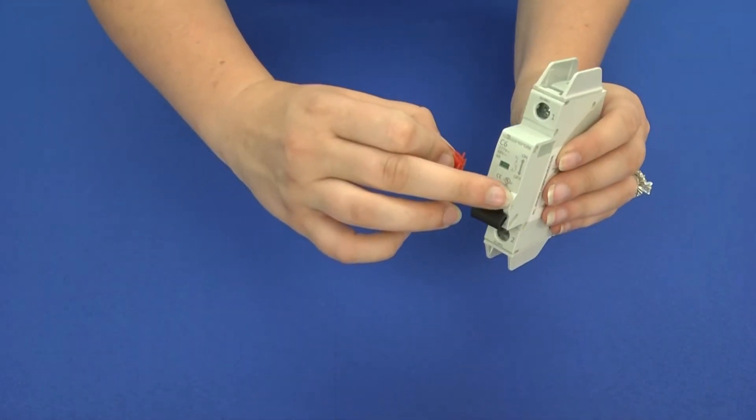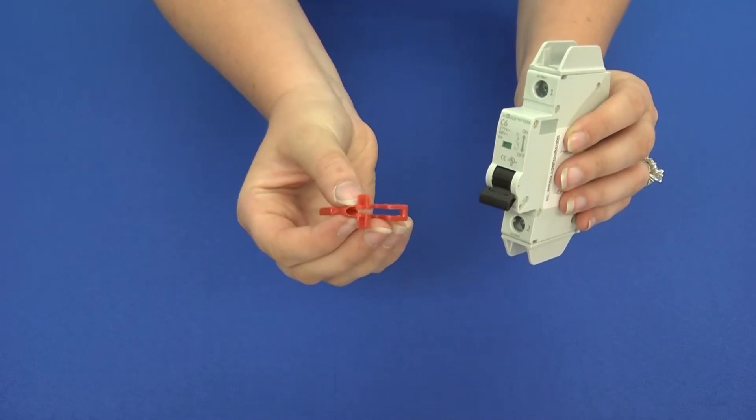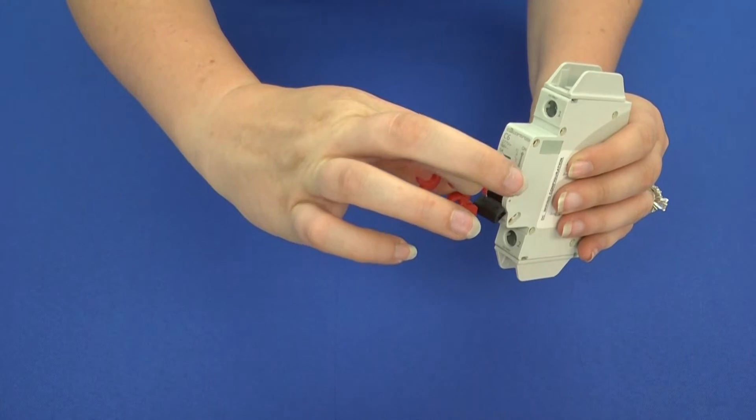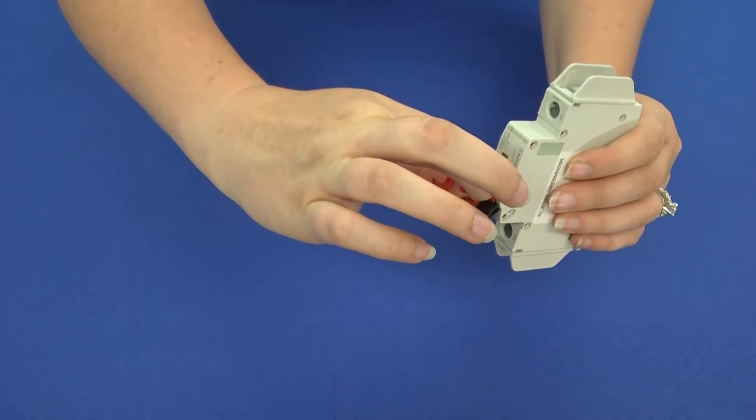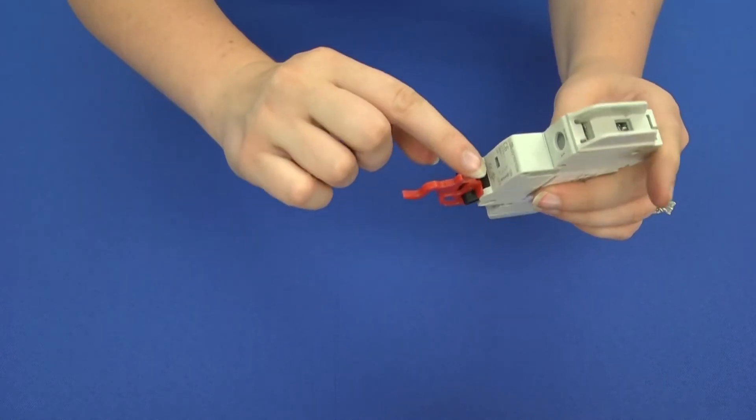In this bar there are two holes, one on each side, and that's where you're going to insert these into. Squeeze and insert into these two holes. After you've inserted that,